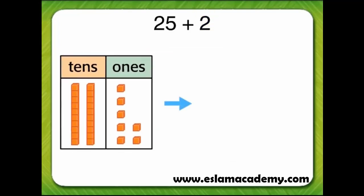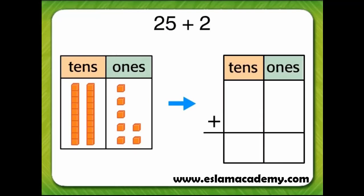We can also show 25 plus 2 on the tens-ones chart using numbers. 25 is two tens and five ones. 2 is two ones.